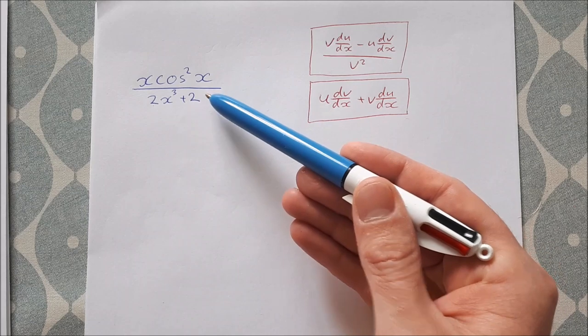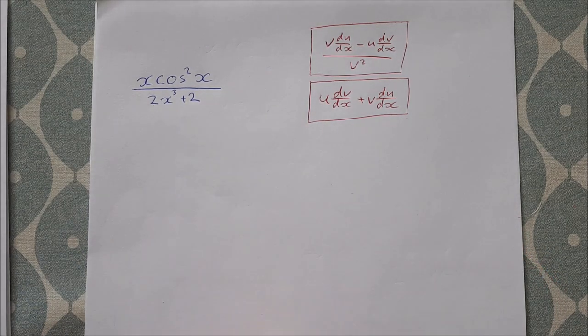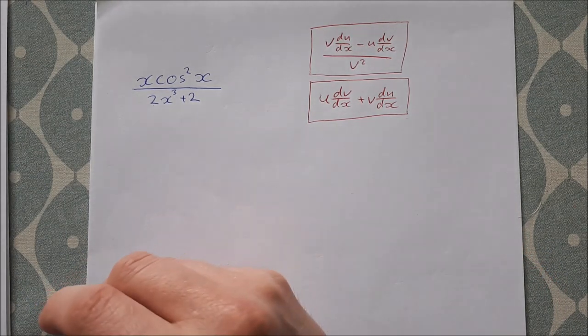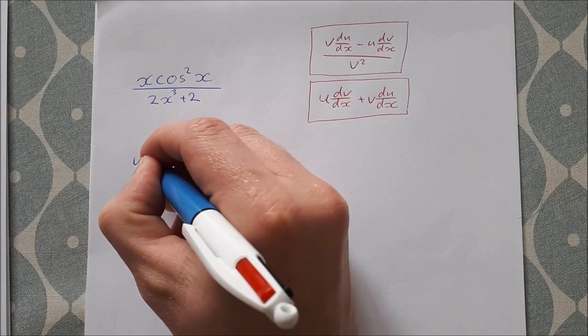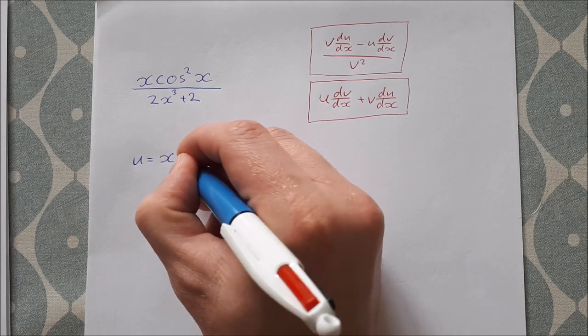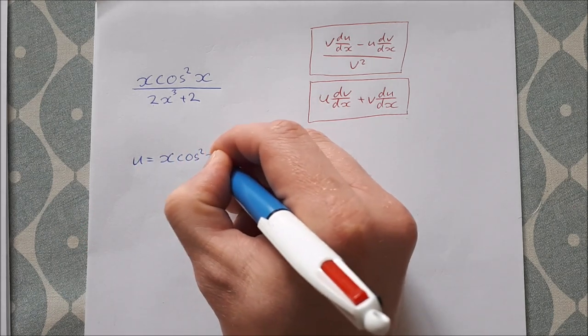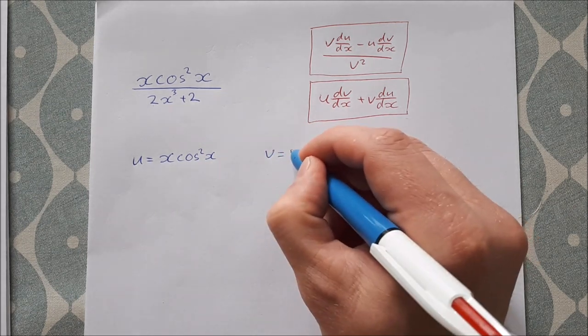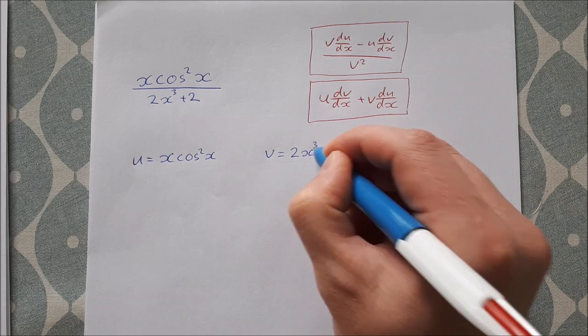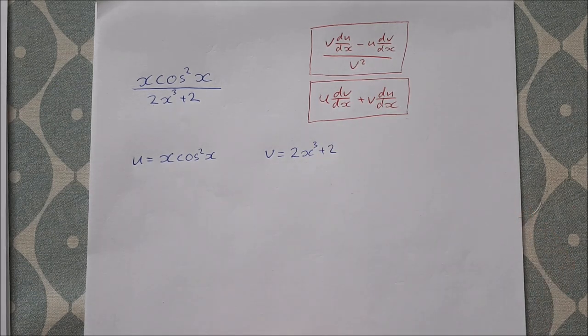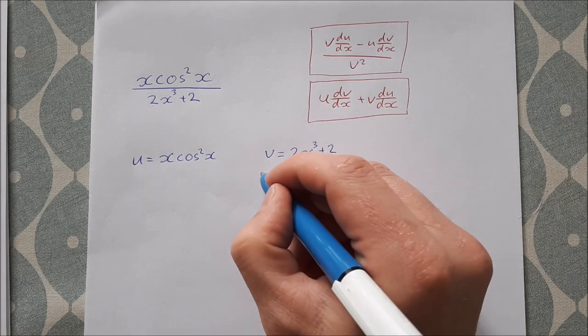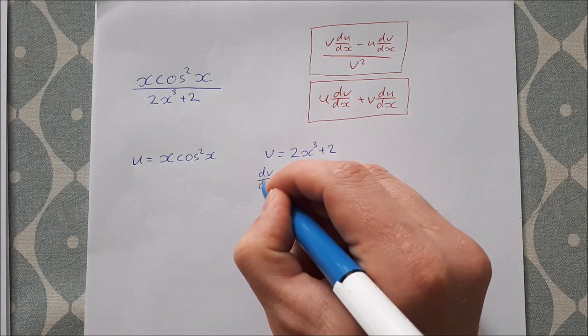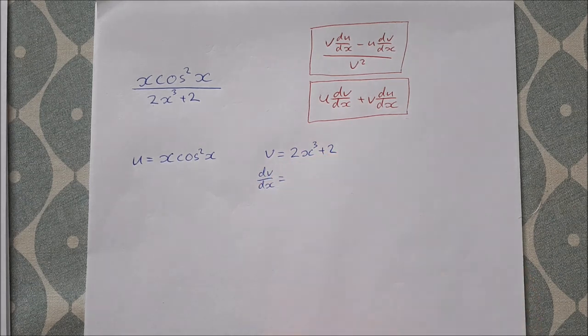When we look at it first, it's quite clearly a quotient—we have one thing on top of another, so we're going to use the quotient rule. So we'll go ahead and write down: u is equal to x cos²x and v is equal to 2x³ + 2.